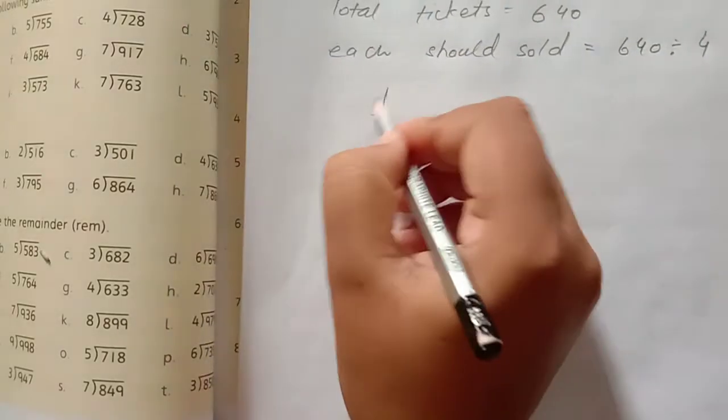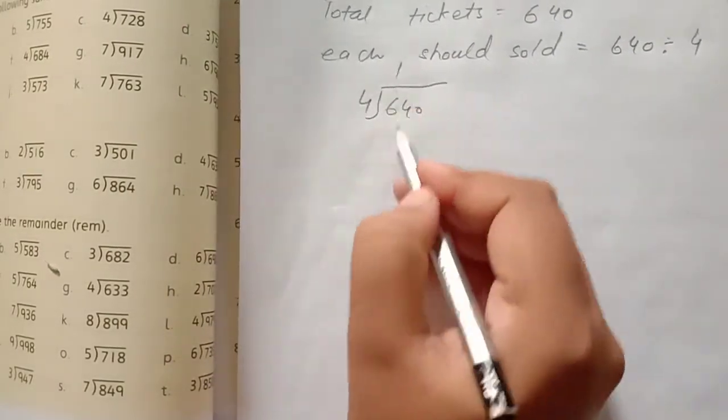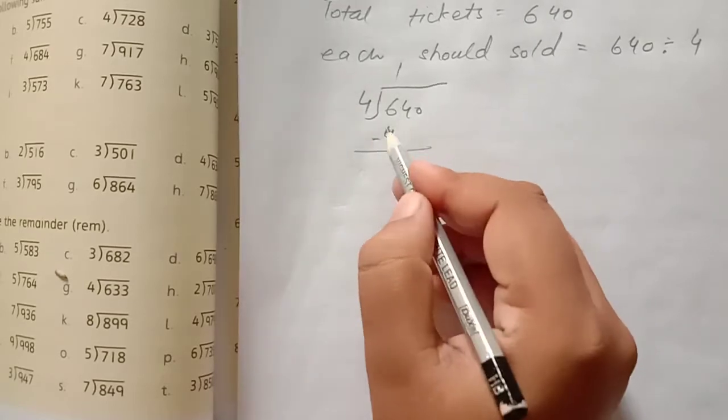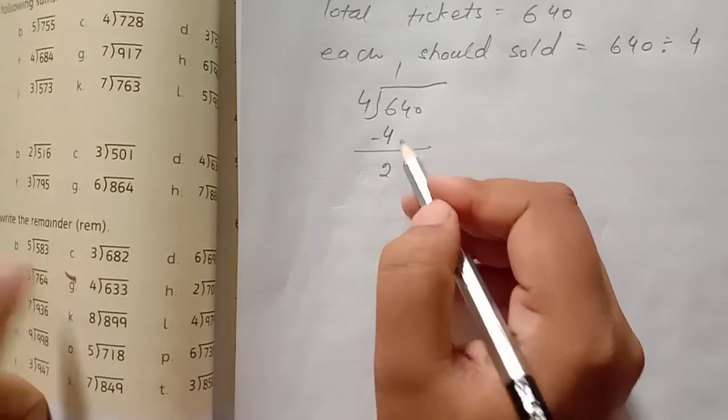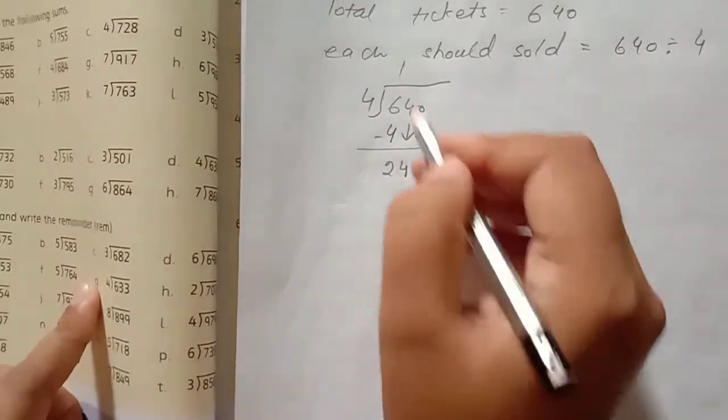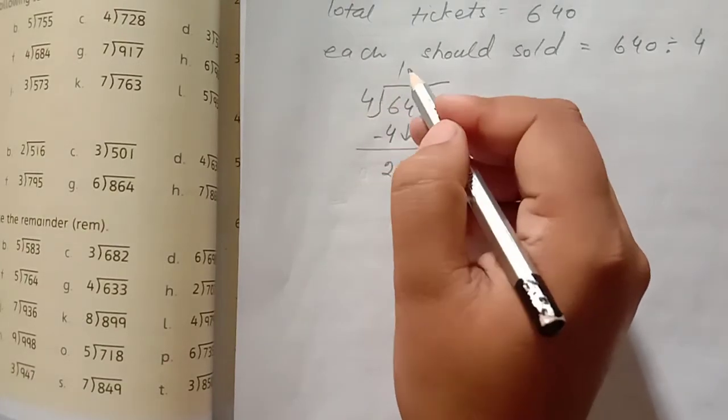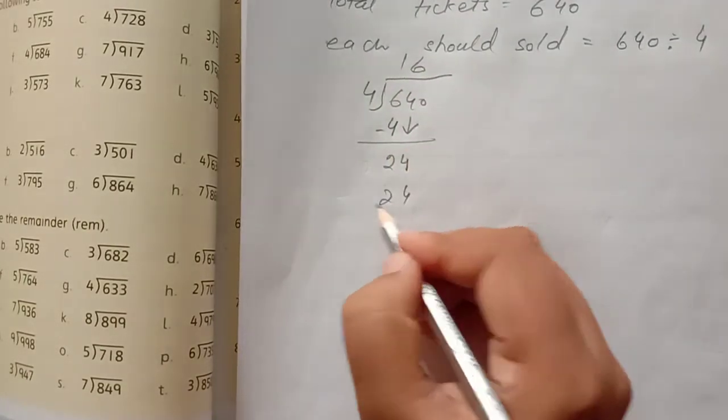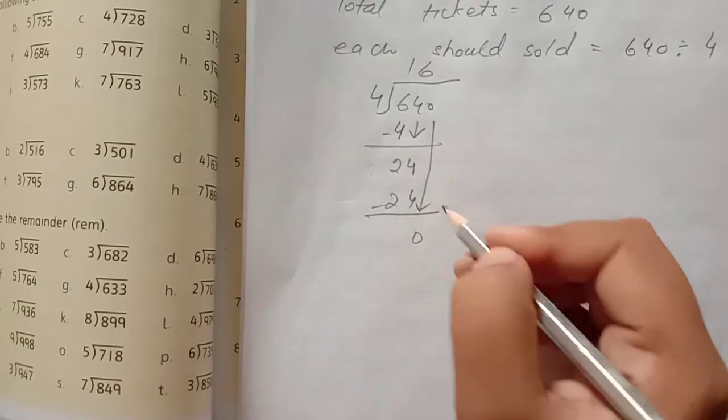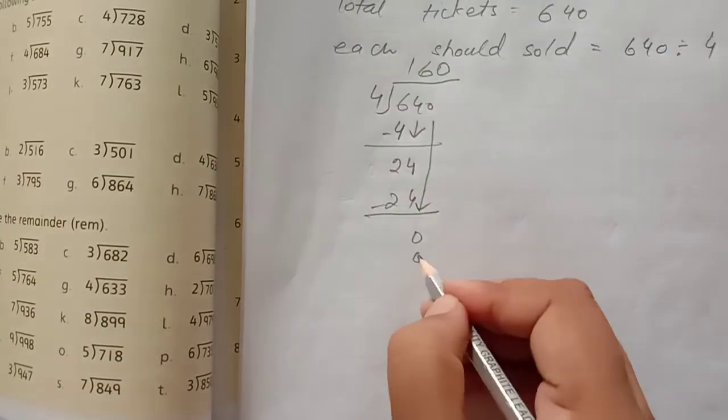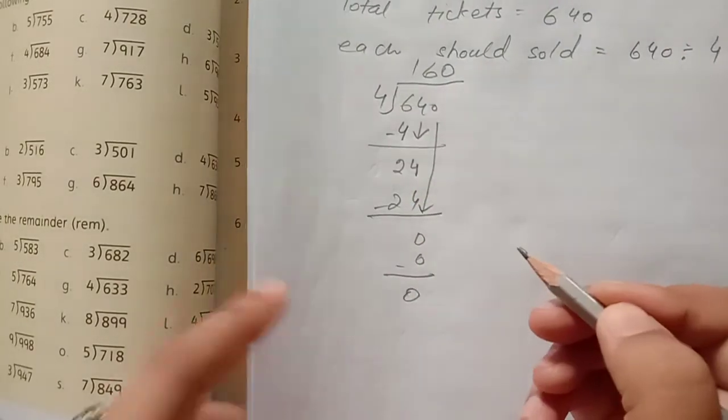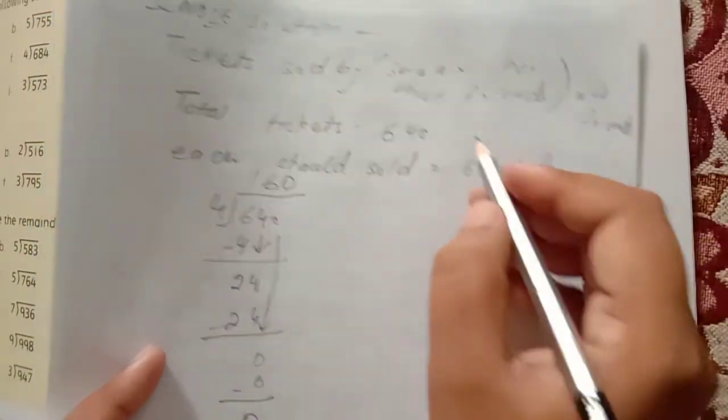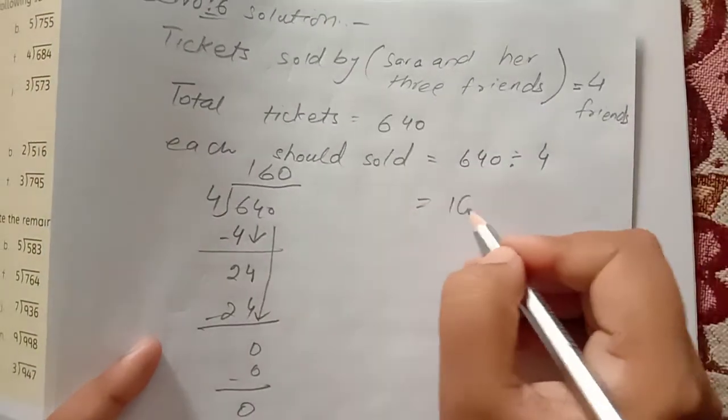640 divided by 4. 4 into 6 is 1, minus 4, 2. 4 into 24 is 6, minus 24, 0. 4 into 0 is 0, 0 minus 0, 0. Each will sell 160 tickets.